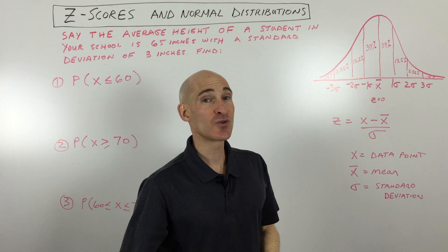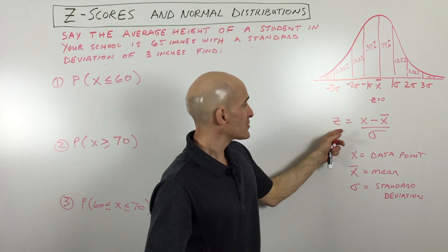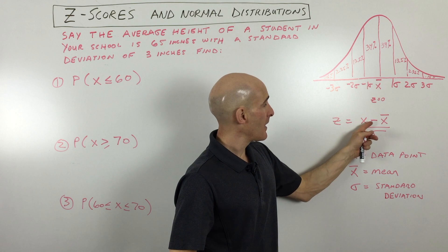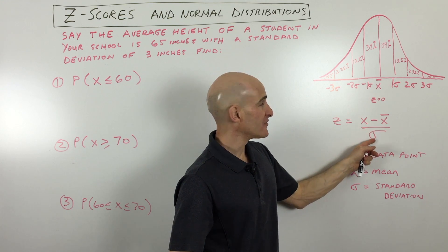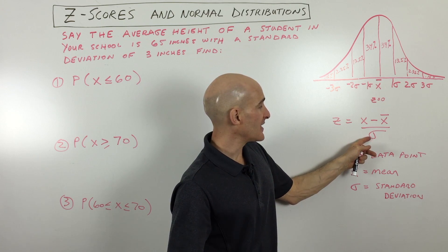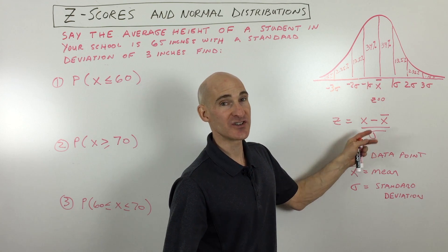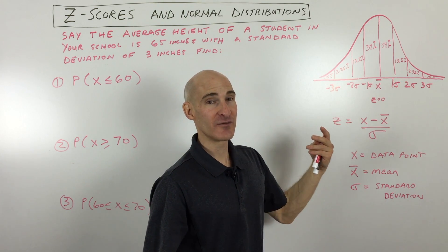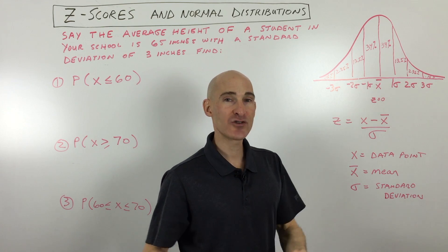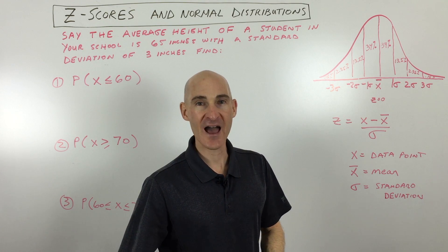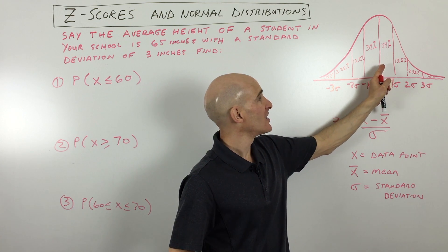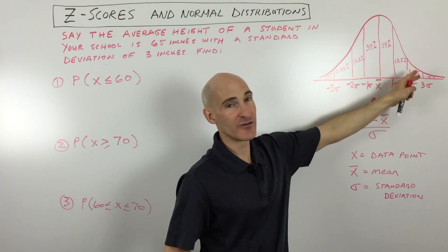That's where the z-scores come in. Here's our formula for calculating the z-score: z equals your data point minus the mean divided by the standard deviation. What this does is calculate how many standard deviations — positive, meaning above the mean, or negative, meaning below the mean — your data point is. There are standard normal distribution tables in your textbook or online, and you can find out exactly what percentage you're dealing with, whether it's above or below the mean.